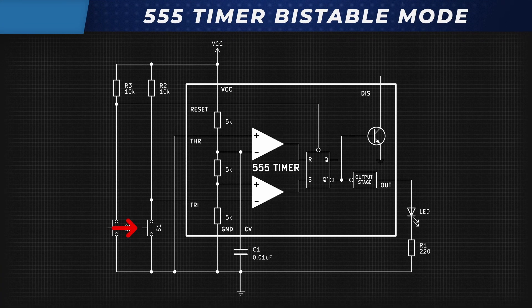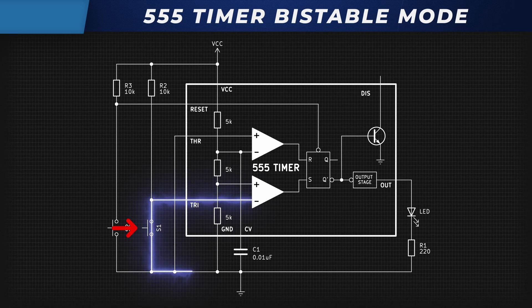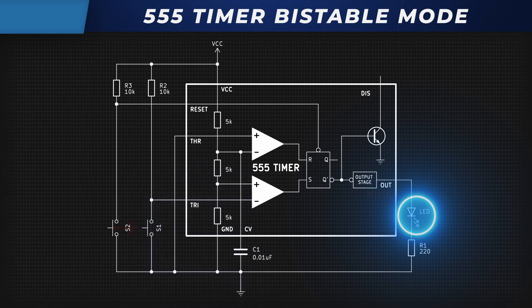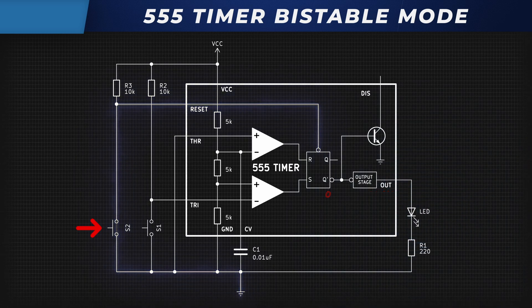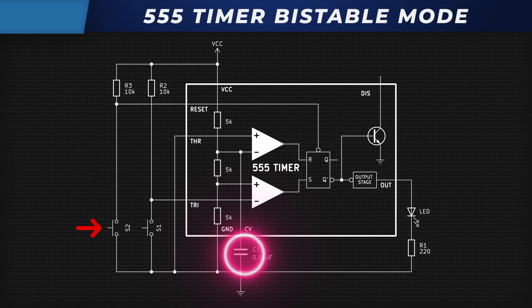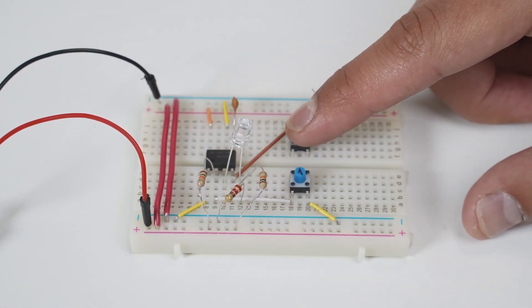One button is connected to the trigger pin that activates the comparator when pressed and turns the output high. The other button is wired to a reset pin, which resets the whole timer and turns the output off. Capacitor C1 is placed to pin 5 to stabilize the reference voltage. With a simple click, you can turn the LED on and off.